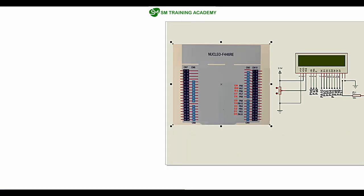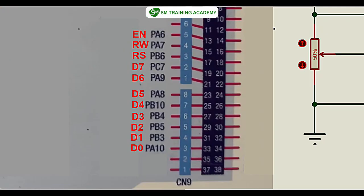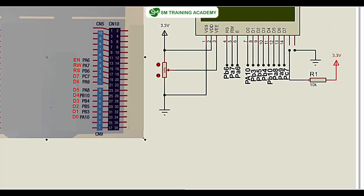This is the Nucleo F446RE development board schematic, and these are the pin nodes I am going to utilize for interfacing the LCD. You can clearly see D0 is connected to PA10, D1 to PB3, D2 to PB5, D3 to PB4, D4 to PB10, D5 to PA8, D6 to PA9, and D7 to PC7. Regarding the configuration pins RS, RW, and Enable — I am connecting PB6 to RS, PA7 to RW, and PA6 to Enable.